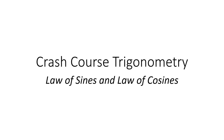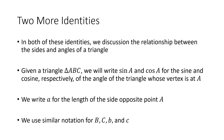Welcome to the last video in my Crash Course Trigonometry series. In this video, we're going to talk about the law of sines and the law of cosines — two more identities that describe the relationship between the sides and the angles of a triangle. We've talked about that relationship for right triangles, but for any triangle, there is still a strong relationship between the measures of the angles and the lengths of the sides.